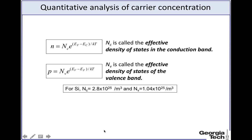To summarize, these are the two important equations we will use repeatedly in this class: the density of electrons n = NC · exp(−(EC − EF) / kT) and the density of holes p = NV · exp(−(EF − EV) / kT). Given the relative position of the Fermi level with respect to EC or EV and the effective density of states NC and NV, we can find the carrier concentrations at any given temperature.